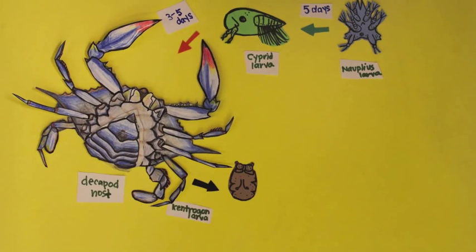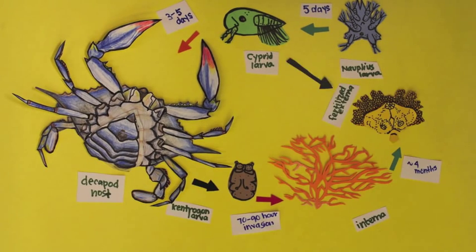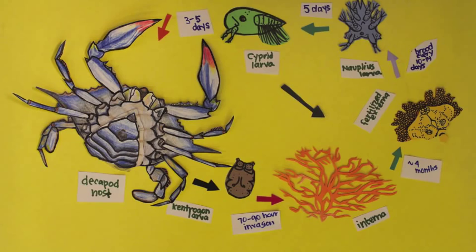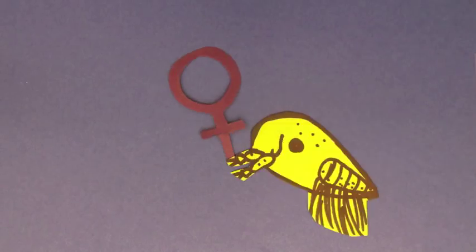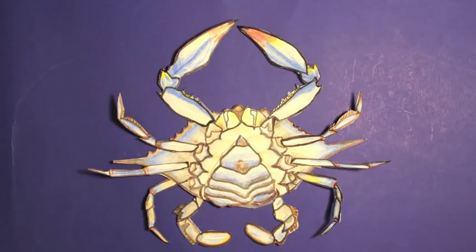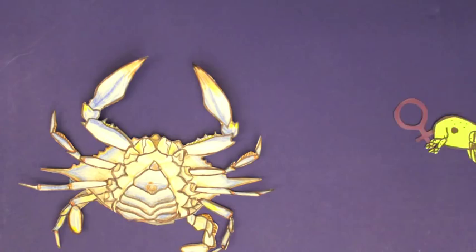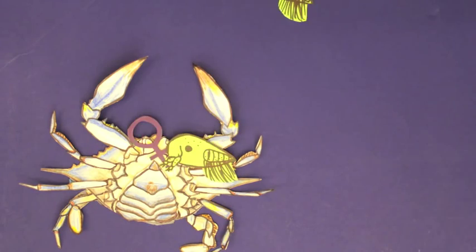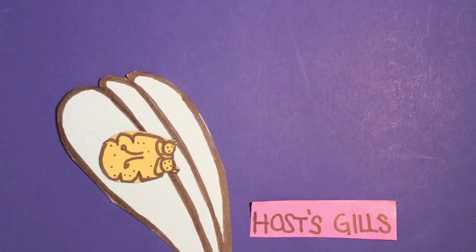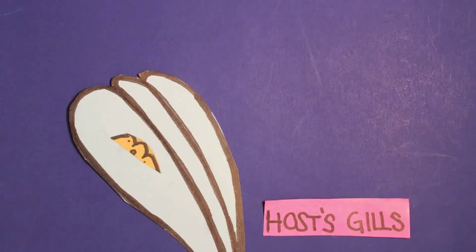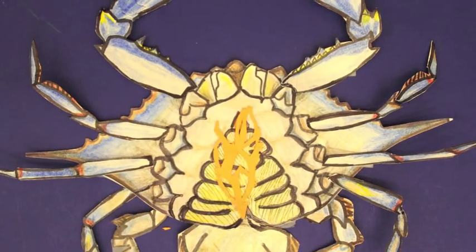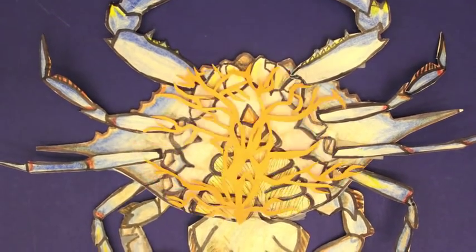These parasitic barnacles go through a complicated series of life stages that ultimately culminate in reproduction. Rhizocephala start out as free-swimming larvae. The female larva's purpose is to house hunt and find a suitable host on which to settle. Once she settles, she metamorphoses, burrows into her host,